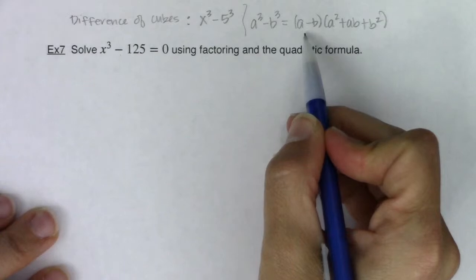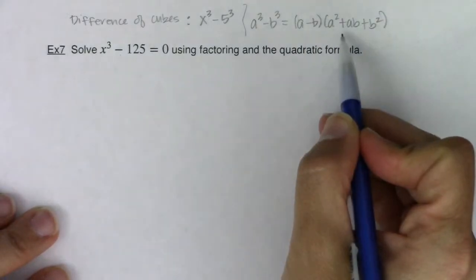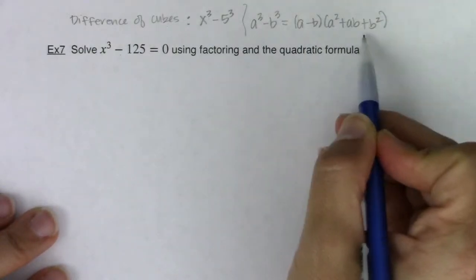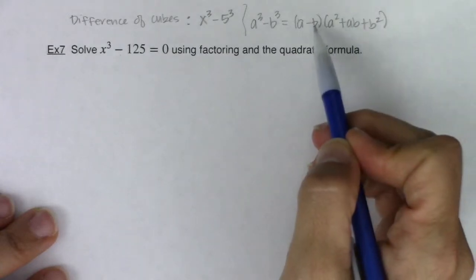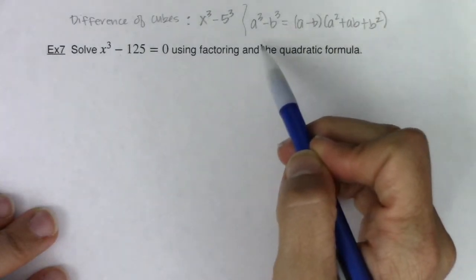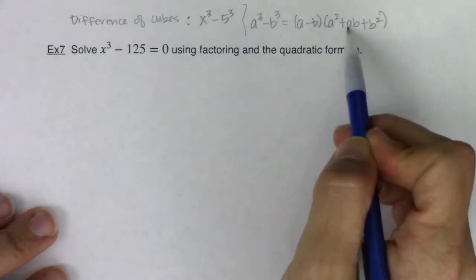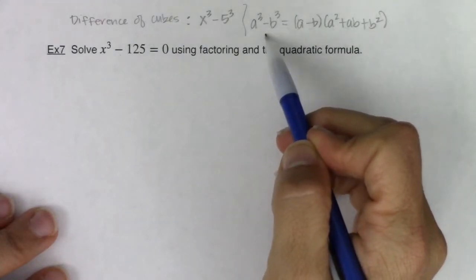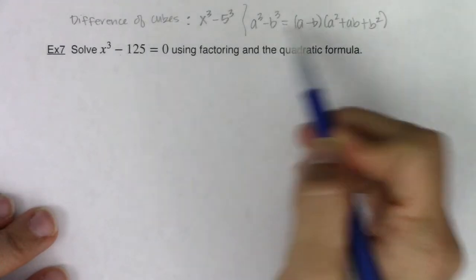So you have a binomial, a minus b, and you have a trinomial, a squared plus ab plus b squared. Now, that's how you can use the factoring formula to factor this difference of cubes.